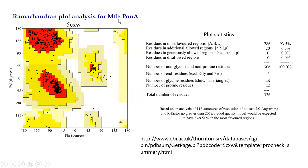The structural authenticity of the protein 5CXW0—the Mycobacterium tuberculosis PonA1 protein—was determined through Ramachandran plot analysis in the PROCHECK web server. No residues of amino acids are located in the disallowed or generously allowed regions. A maximum of 286 residues, which is 93.5%, are located in the most favored region, and 6.5% in the additionally allowed region. Since more than 90% of residues are in the favored region, this is a very good structure to be used as a target protein for molecular docking.